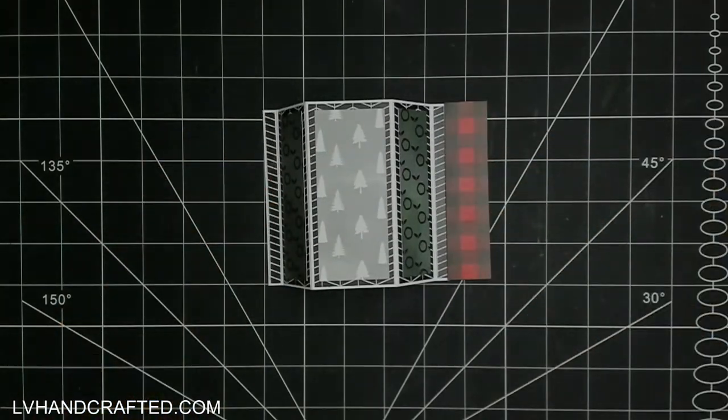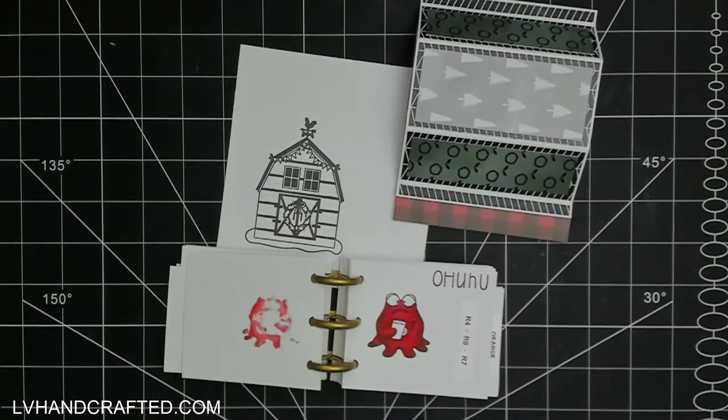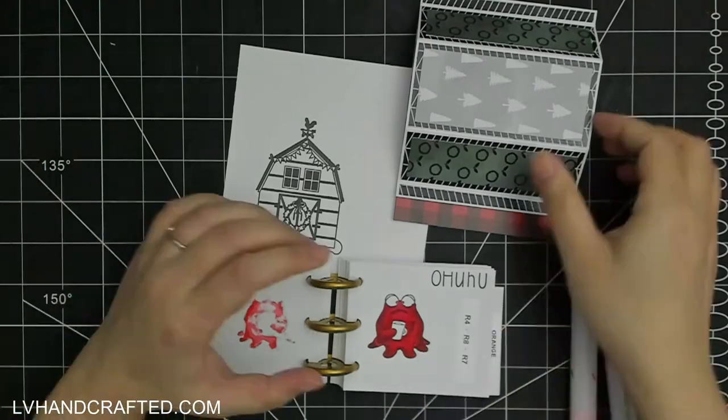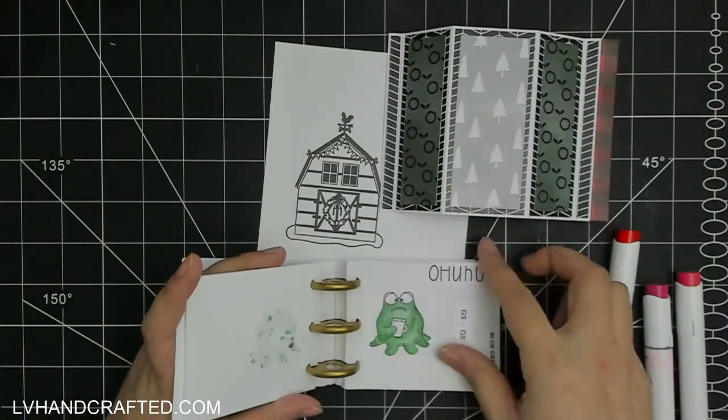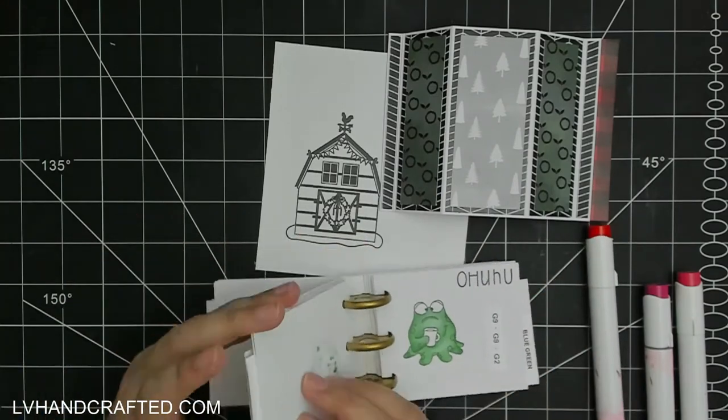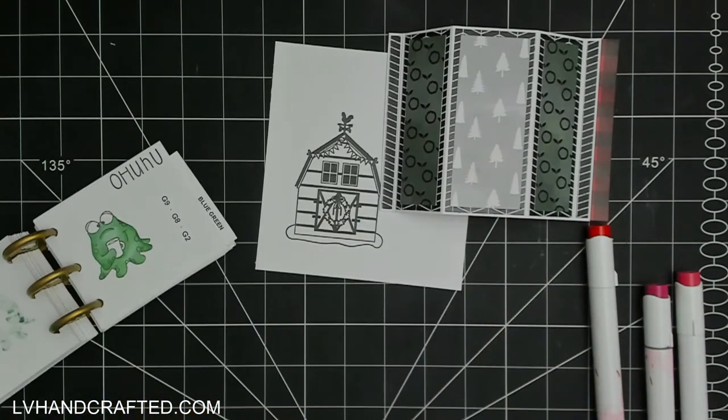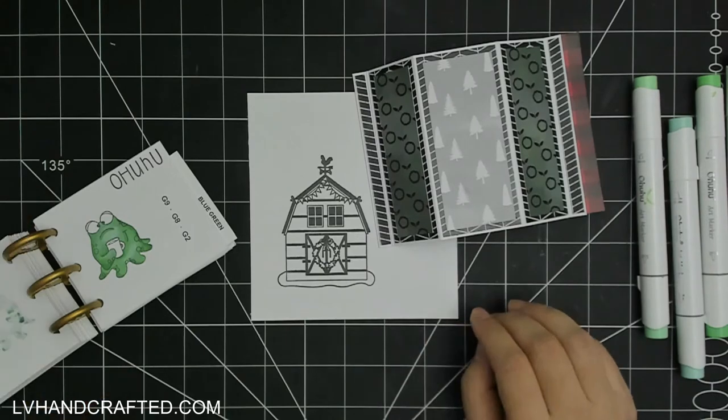Now I'm going to just color up one of the stamped images in this really large 6 by 8 stamp set that we get this month. This is all about Christmas on the farm, so it's got some great sentiments and some really nice images as well.